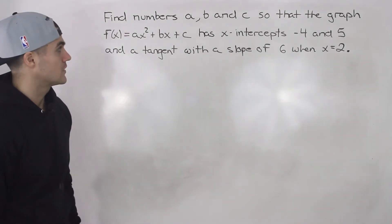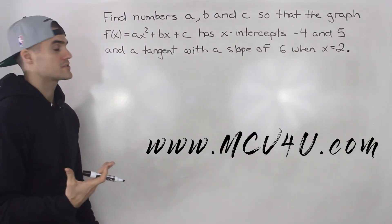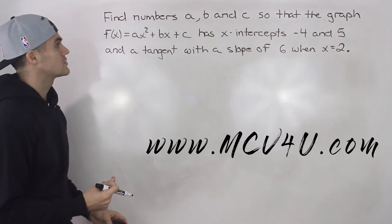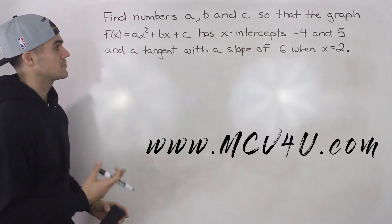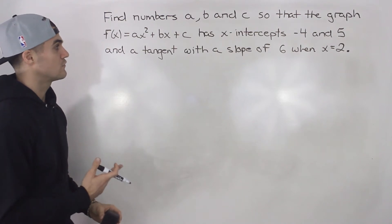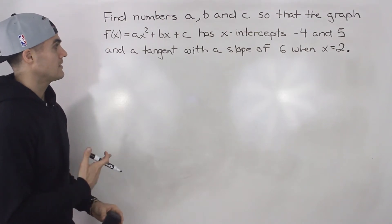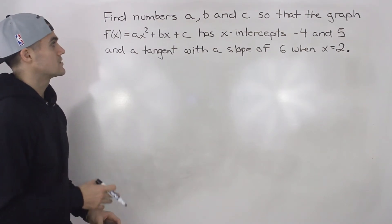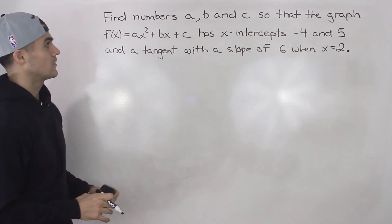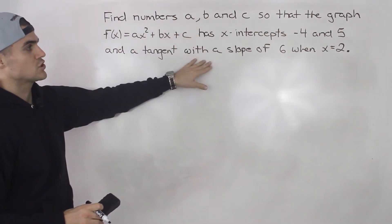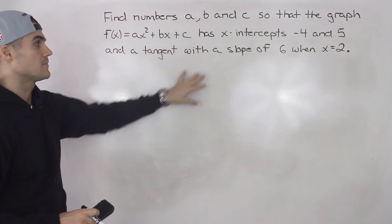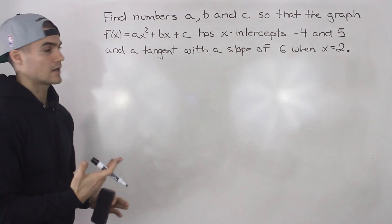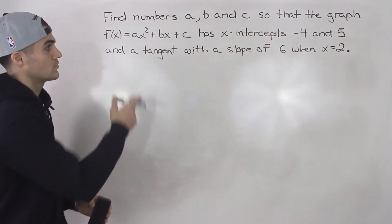Welcome back. Moving on to another popular type of question. We have to find numbers a, b, and c so that the graph f of x equals ax squared plus bx plus c has x-intercepts negative 4 and 5, and a tangent with a slope of 6 when x is equal to 2. Whenever you get a question like this where you have to find constants and you're given information about the function, you're going to have to create expressions and then do substitution and elimination to solve for those variables.